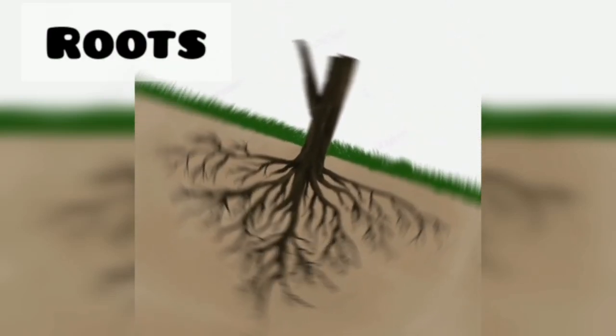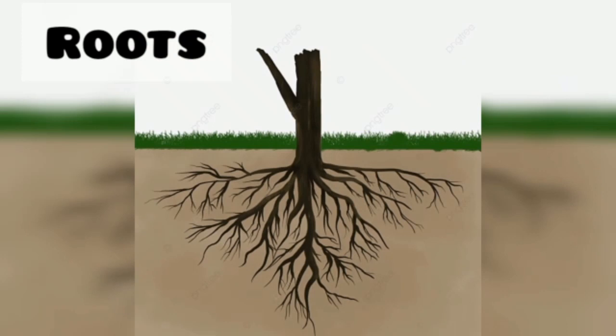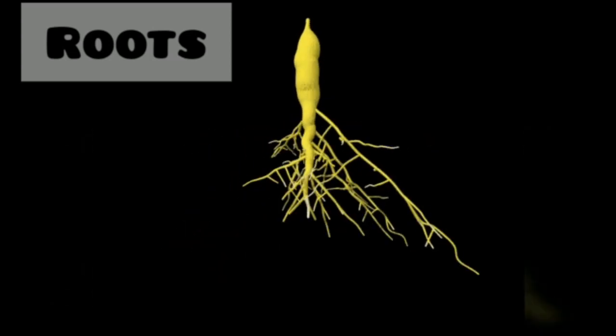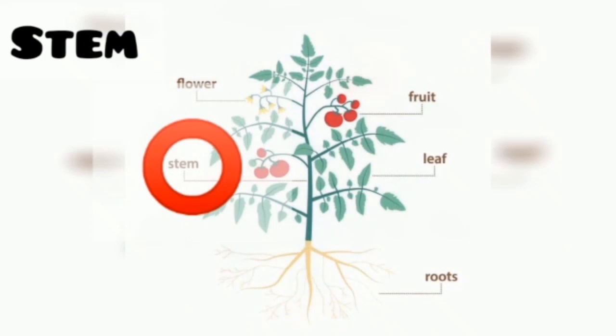Roots. It is the part that lies below the surface of the soil. It absorbs water and minerals from the soil and stores food for future use.